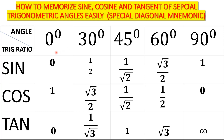I'm sure you are all used to this table. We know that the sine, cosine, and tangent of special trigonometric angles — 0, 30, 45, 60, and 90 degrees — are the values we have in this table. For reminder purposes, the special trigonometric angles are 0, 30, 45, 60, and 90 degrees, and the fundamental trigonometric ratios are the sine, cosine, and tangent.